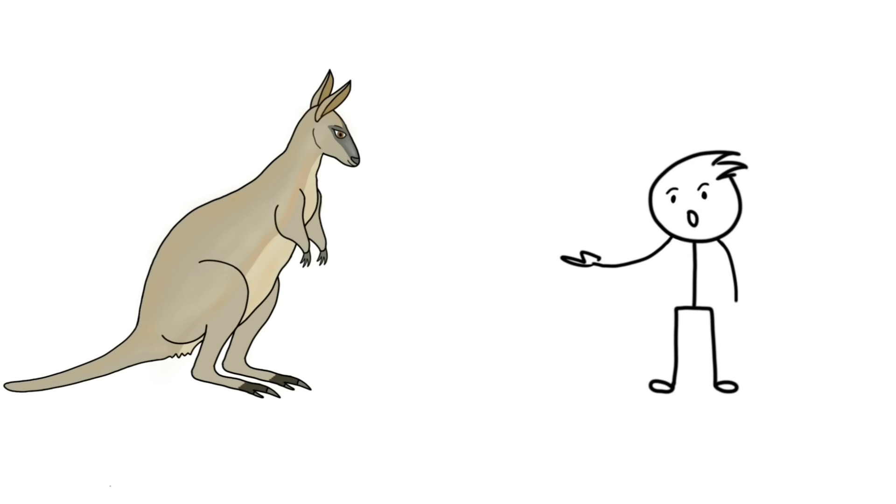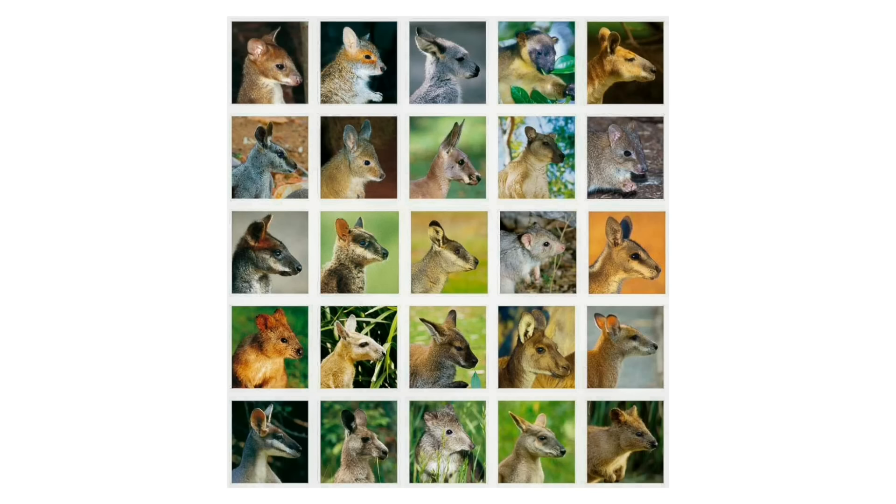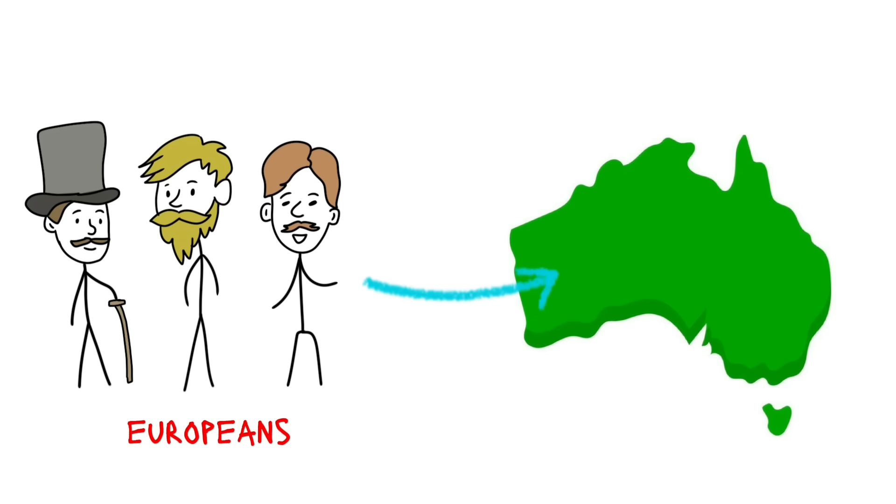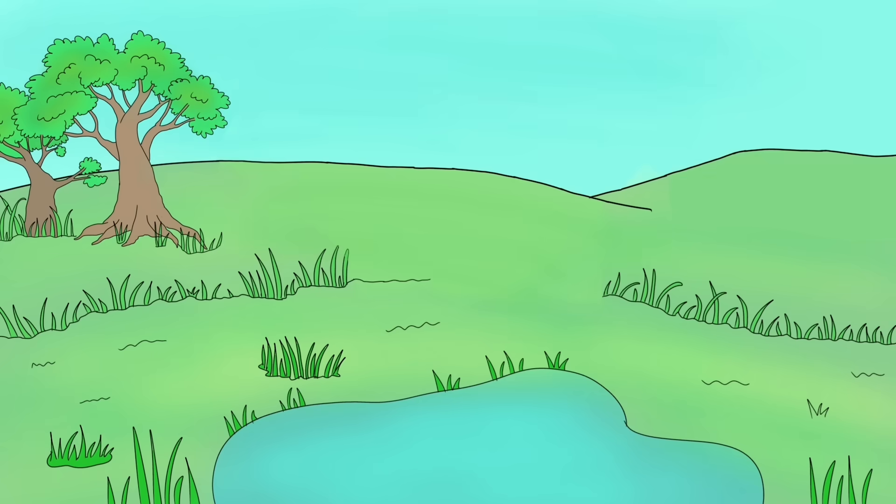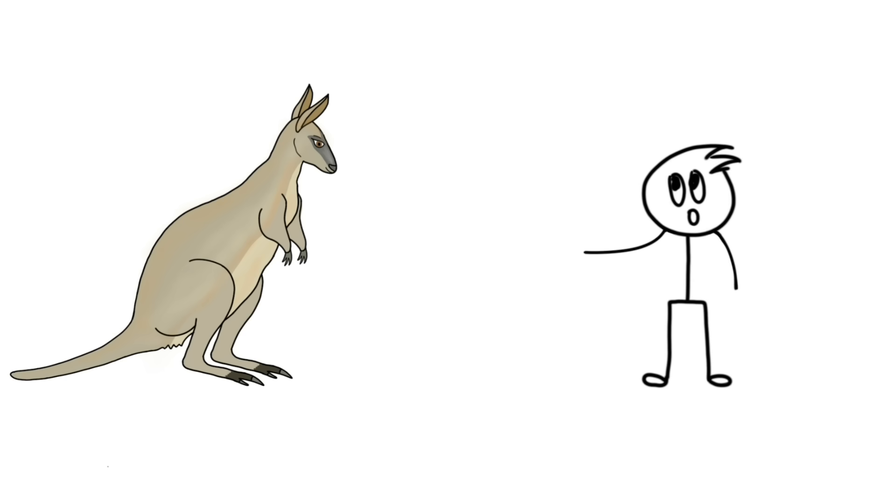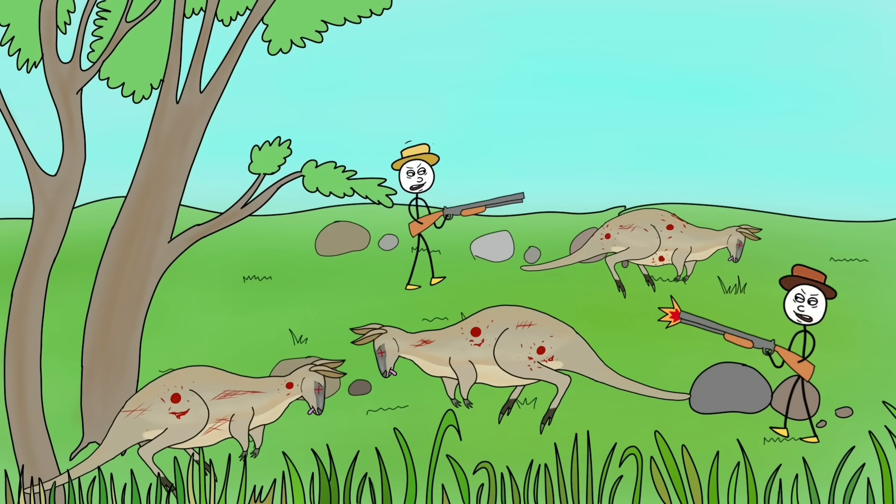This kangaroo-looking guy was Toolache Wallaby. Those who saw them believed that these were the most elegant species among all the kangaroo family. When Europeans settled in Australia, they started destroying the natural habitat. The swamp grassland was overtaken, and the wallabies had to shrink to confined space. Their pelt was a good quality material. So, they started hunting them for the pelt too.